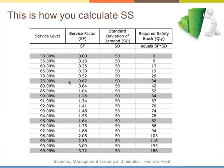For instance, say you want a 95% service level — meaning you're happy with achieving the customer's demand 95% of the time. If you have a standard deviation of demand of 50, the service factor is 1.64. So your safety stock is 1.64 times 50, which equals 82. You need to hold 82 units in safety stock to achieve a 95% customer service level with a standard deviation on demand of 50. If you want 99%, the service factor is 2.33, multiplied by 50, giving you 116 units in safety stock.